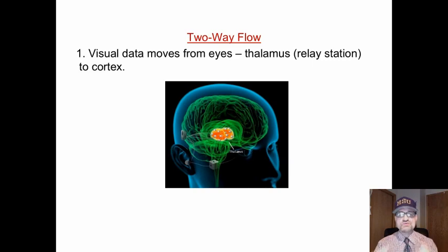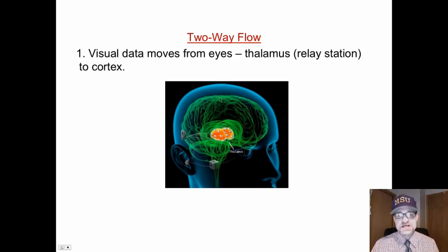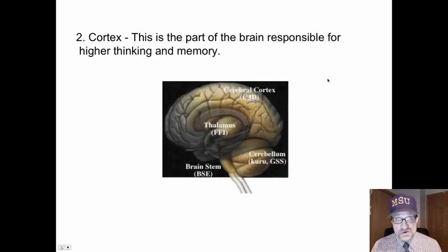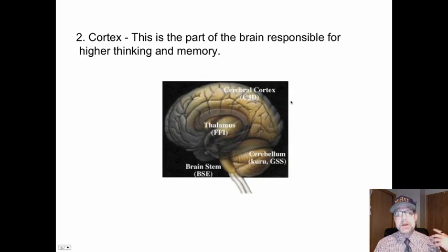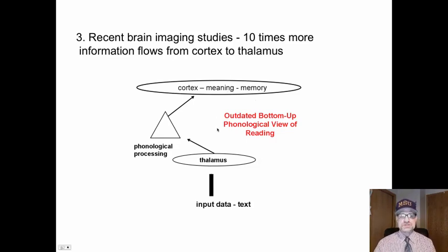There is a two-way flow of information. Visual data moves from the eyes to the thalamus — the relay station — and from the thalamus up to the cortex. The cortex is the part of the brain responsible for higher thinking and memory. However, recent brain imaging studies found that ten times more information flows from the cortex down to the thalamus than from the thalamus up.